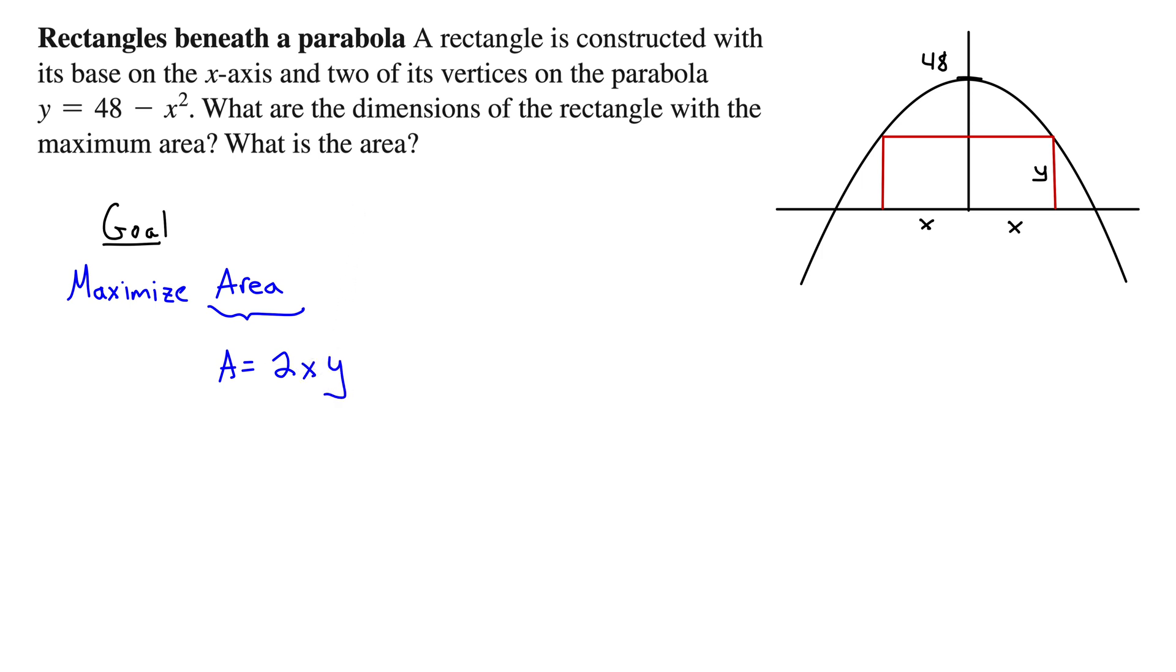The equation for the thing we're trying to optimize is called the objective function. Though not knowing that specific term will not affect your problem solving on these optimization problems in any way. Next we need our constraint.